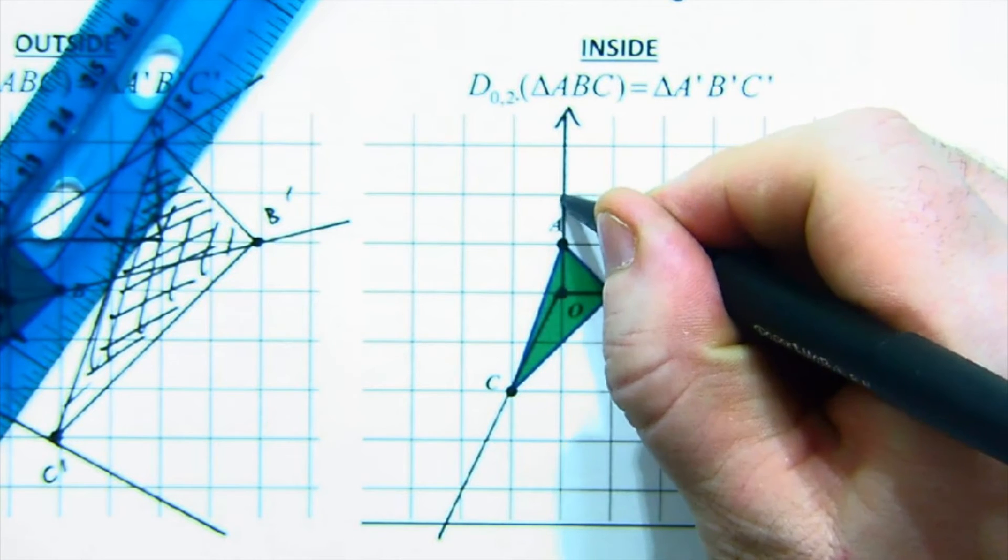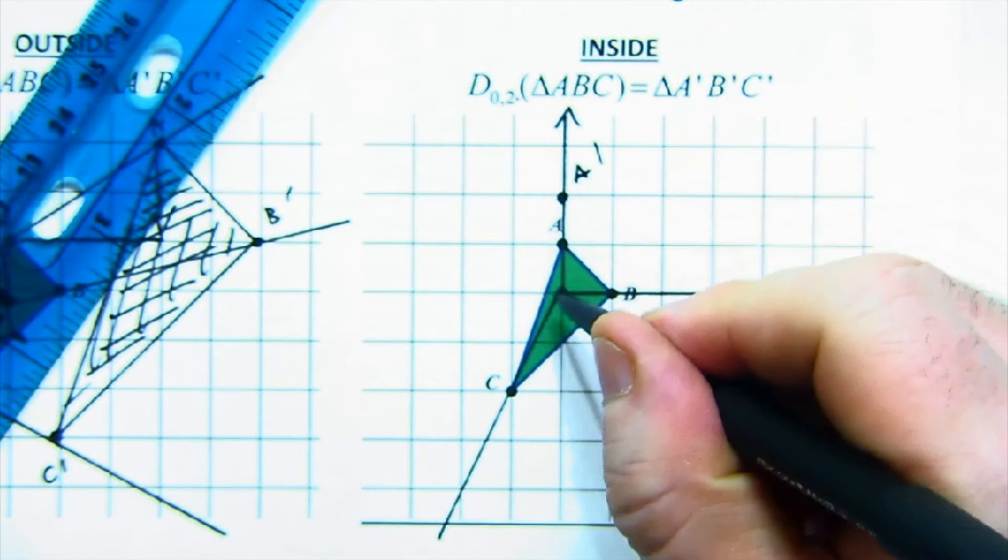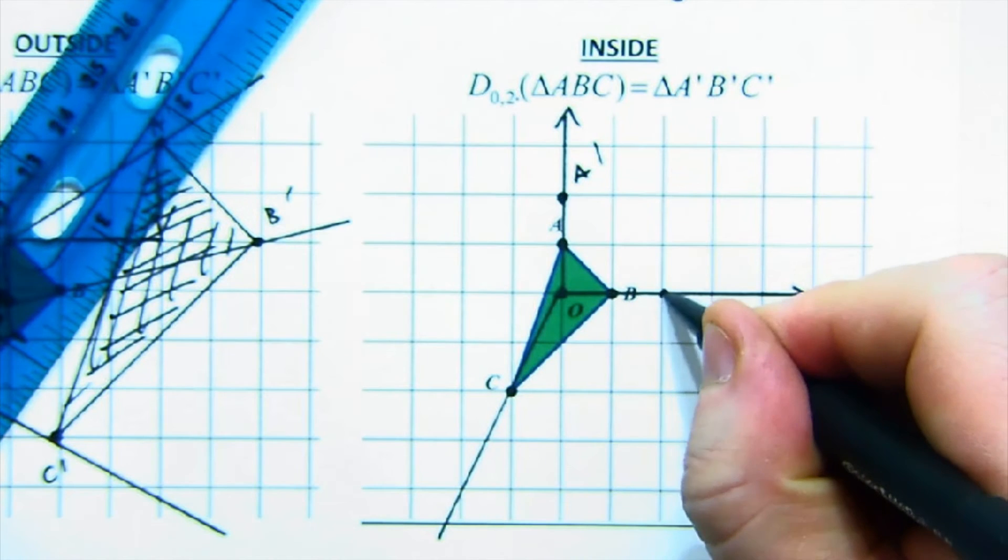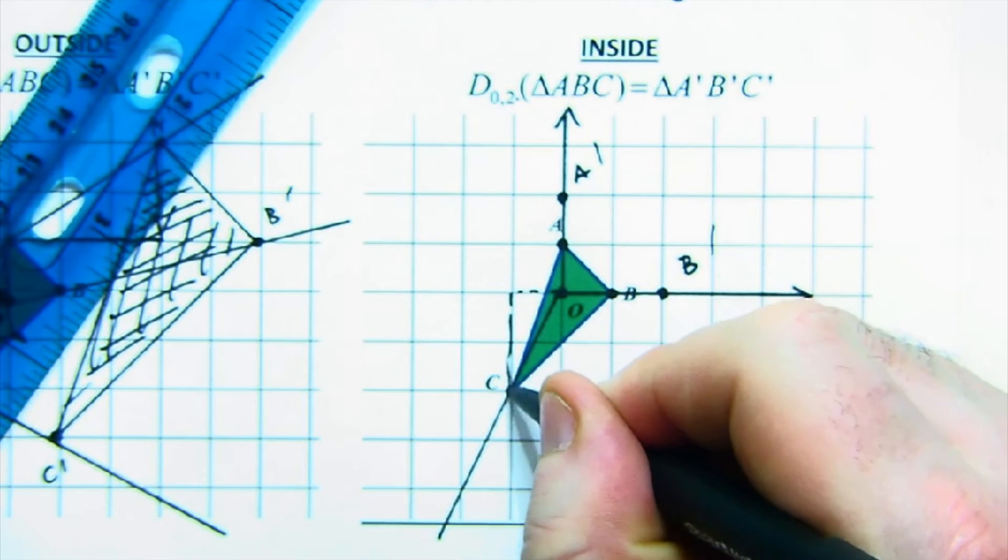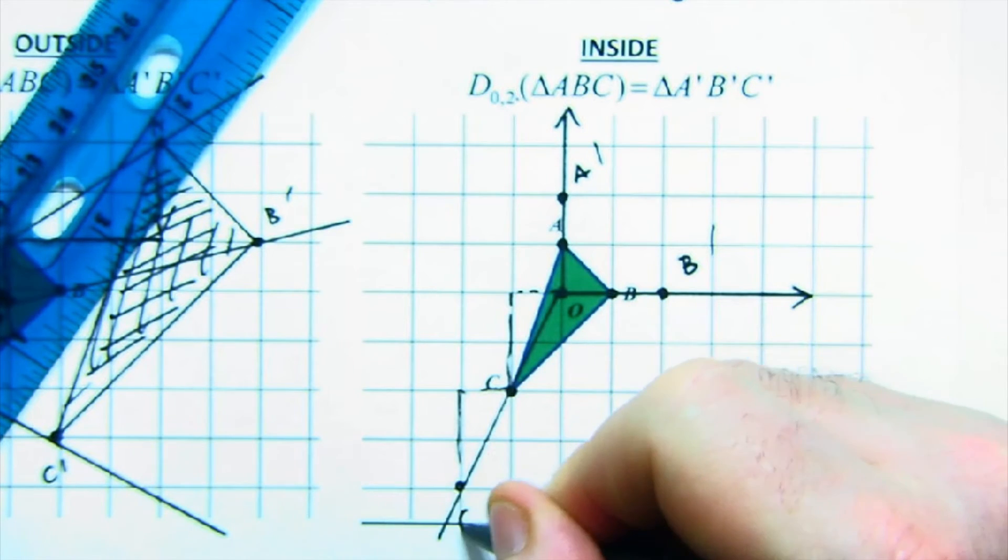So one up means two up. So there's A prime. B is one to the right, so B prime would be two to the right. C is over, again, follow the slope, over one, down two, over one, down two. There's C prime.